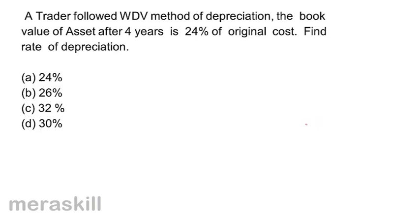A trader followed the Written Down Value (WDV) method of depreciation. The book value of the asset after 4 years is 24% of the original cost. Find the rate of depreciation. Options: A. 24%, B. 26%, C. 32%, D. 30%.